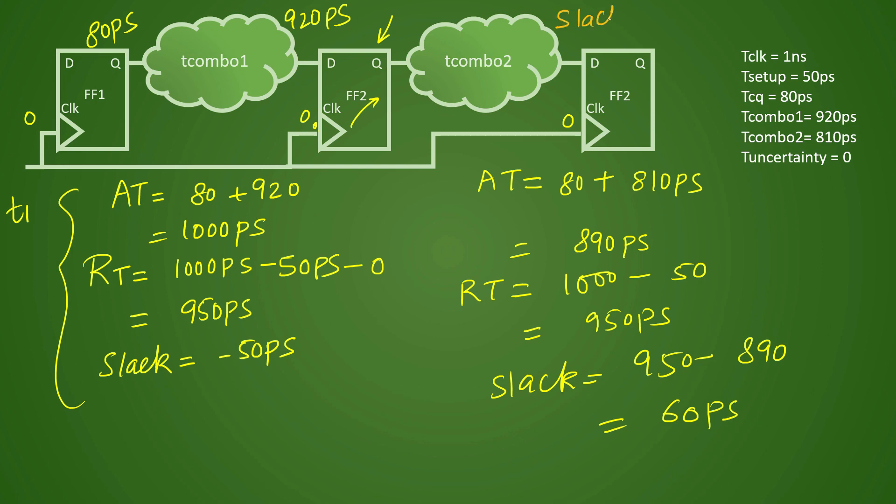Now if you observe, slack is plus 60 picoseconds in this path and slack was minus 50 picoseconds in this particular path. Now let's say if you want to make use of useful skew concept, clock latency will not be zero.